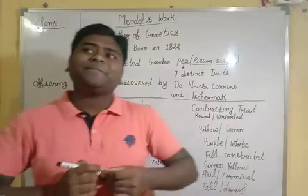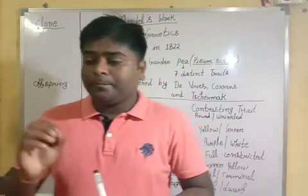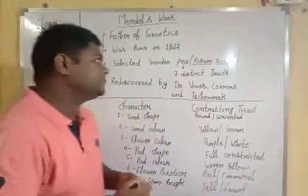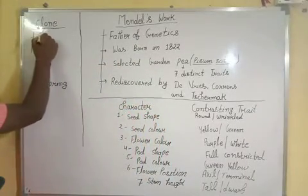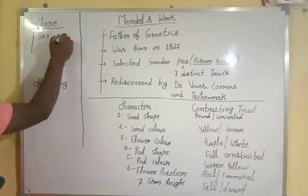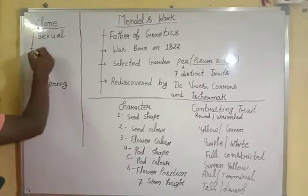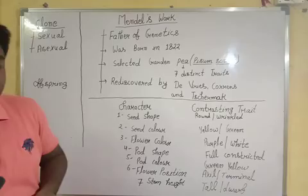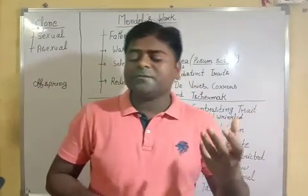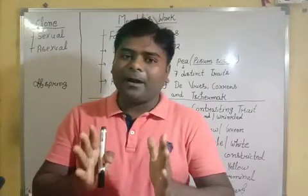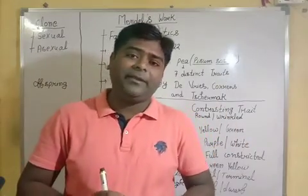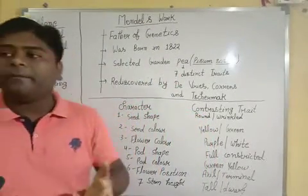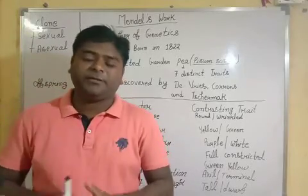Before starting the explanation of this term, you must have studied about reproduction. We have two kinds of reproduction basically: sexual and asexual. In case of sexual reproduction, there is an involvement of two partners and there is a formation of gametes. But in case of asexual reproduction, there is no involvement of partners and there is no formation of gametes.